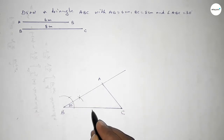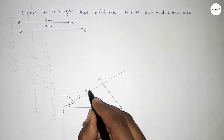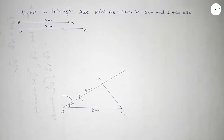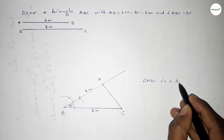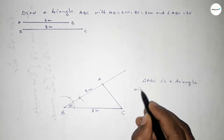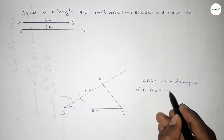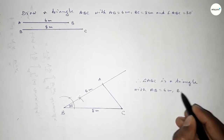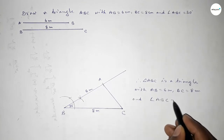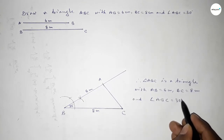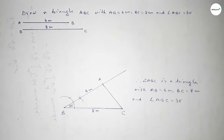BC equals 8 centimeters and AB equals 6 centimeters. Therefore triangle ABC is a triangle with AB equal to 6 centimeters, BC equal to 8 centimeters, and angle ABC equal to 30 degrees. That's all — thanks for watching. If this video is helpful to you, please share it with your friends.